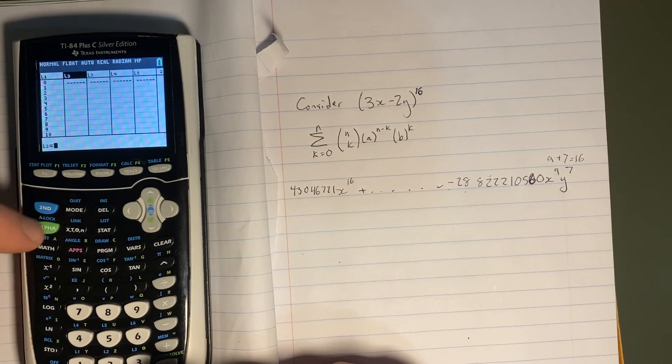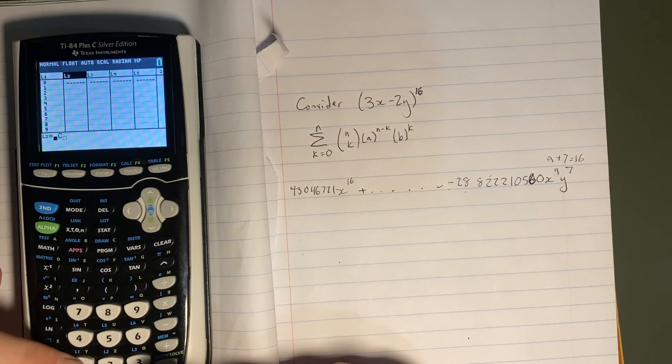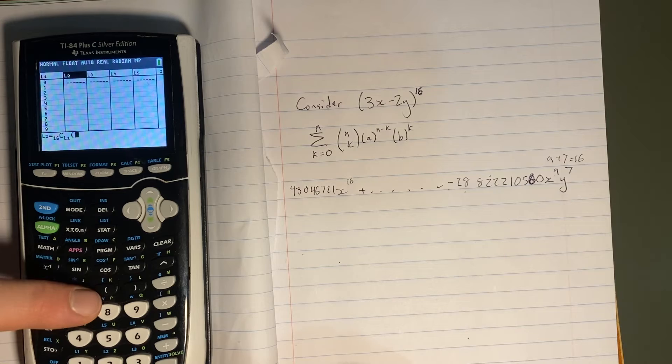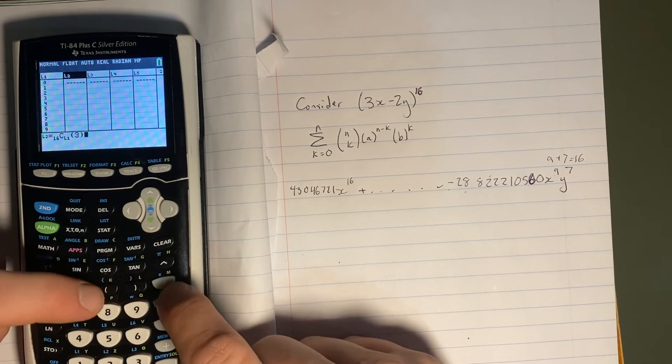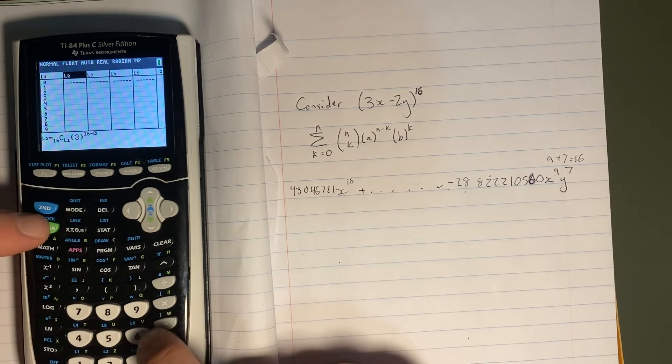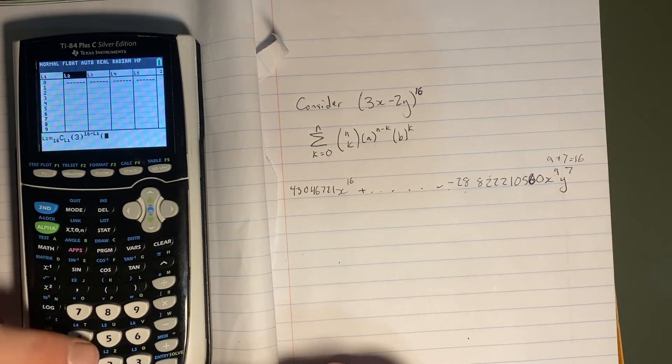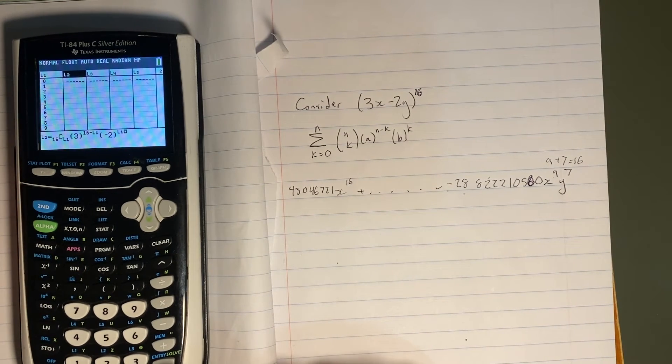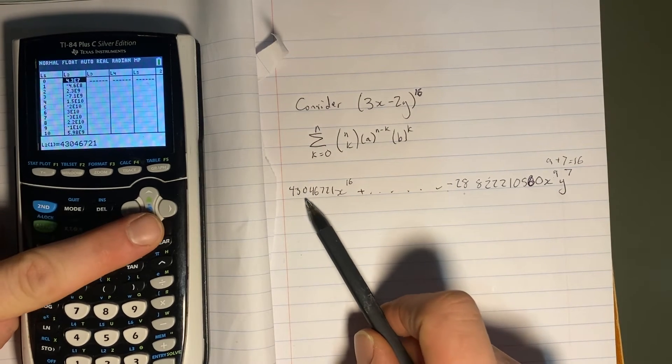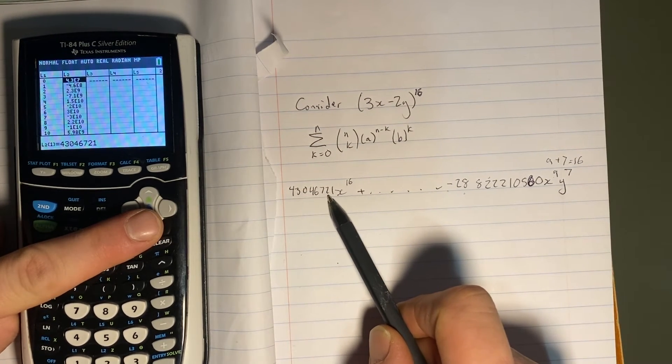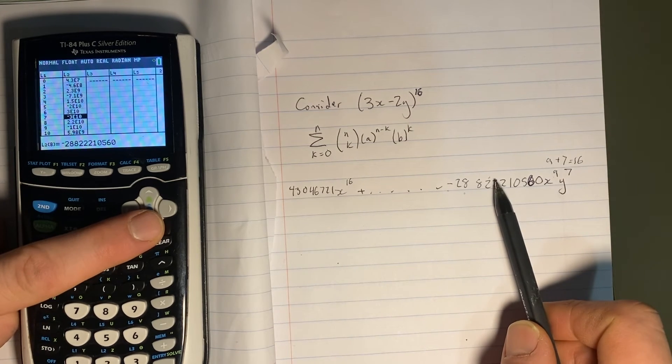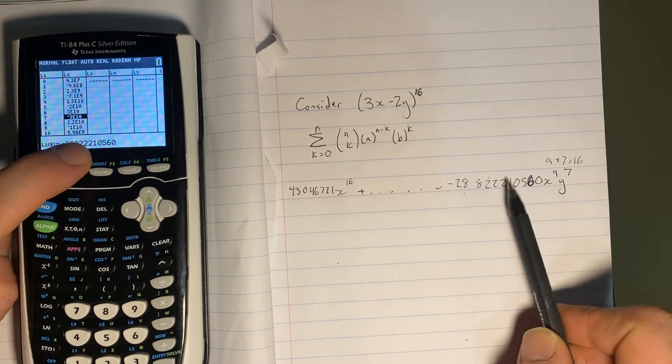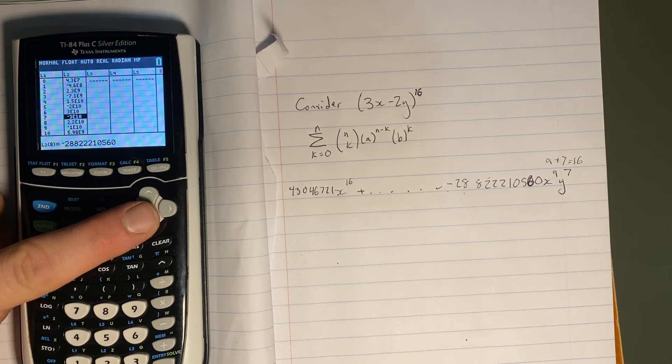So I'm going to do N choose K. So that's going to be from alpha F2 for my choose notation. My N value is 16 and my K value is L1. And then I'm going to raise 3 to the power. And it's going to be 16 minus L1. And then I'm going to raise negative 2 to the power. And it's going to be just L1. And we should see that same coefficient of 43,046,721. And again, just scrolling down until we had an exponent of 7 on Y. Because remember, our K value is our Y exponent. We have the same number. So we can do the whole thing in one fell swoop.